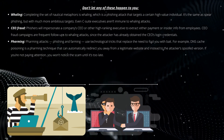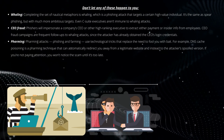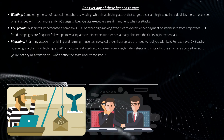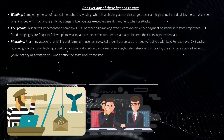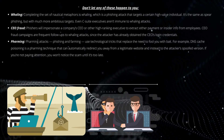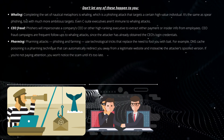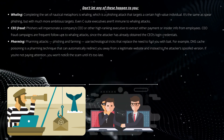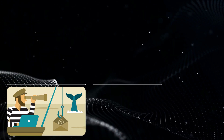Pharming. Pharming attacks use technological tricks to replace the need to fool you with bait. For example, DNS cache poisoning is a pharming technique that can automatically redirect you away from a legitimate website and instead to the attacker's spoofed version. If you're not paying attention, you won't notice the scam until it's too late.